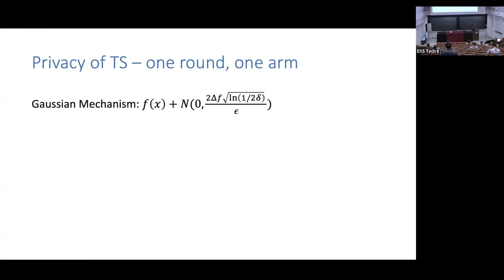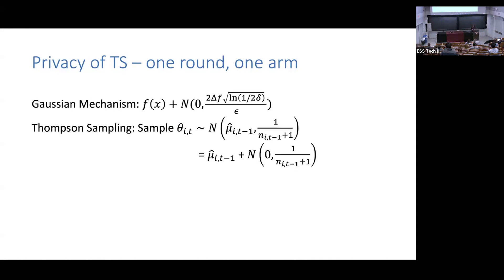Can Thompson sampling be differentially private as-is? Let's think about it in the case of one round and one arm. Recall the Gaussian mechanism: I add mean-zero Gaussian noise with some variance. What I'm doing is sampling a θ_i from a Gaussian, effectively pulling out my empirical mean as the function value, and then adding mean-zero Gaussian noise with some variance. So this looks basically the same as the Gaussian mechanism.